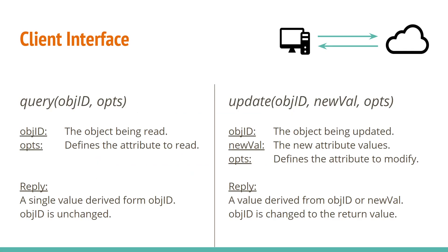Here are more detailed explanations on the query and update operations. Query takes an object ID to specify the object being read from, and an options variable to specify which attributes of the object are being read. The server will generate a return value based on the object ID and return it in the reply to the client. The update operation is similar, but contains an additional new value parameter to update the object with, and the reply value is used as a new object ID. In both cases, the reply value will depend on the options passed in the request.